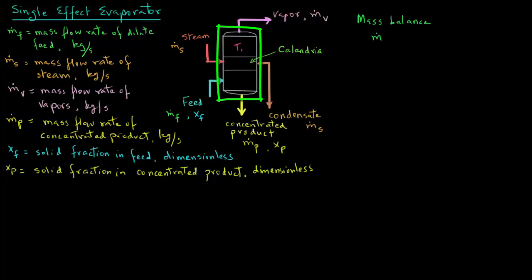The feed entering the system has mass flow rate M.f, and that equals the mass flow rate of vapors M.v plus M.p, the mass flow rate of concentrated product leaving the system. Note that in the evaporator, steam and feed remain separated because this is an indirect way of heating. When steam condenses, it leaves the evaporator as condensate, so steam does not mix with the feed. Therefore, we do not include the mass flow rate terms for either the steam or the condensate in the mass balance.